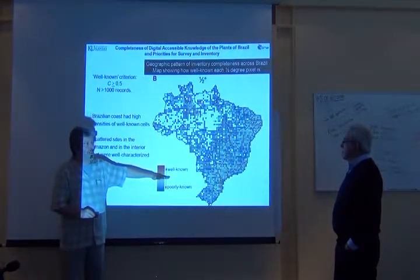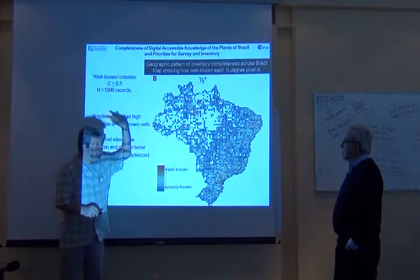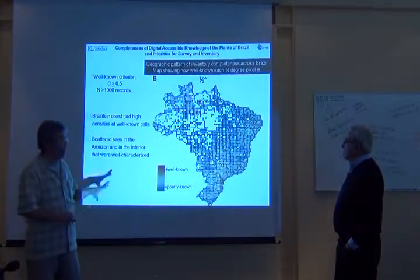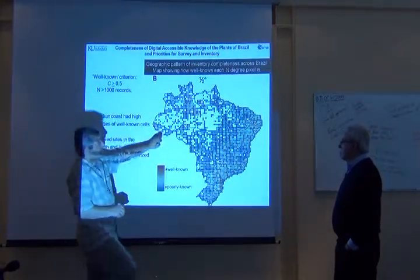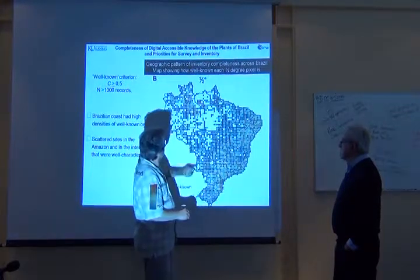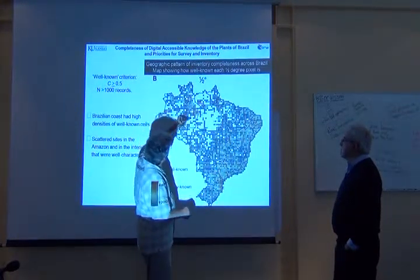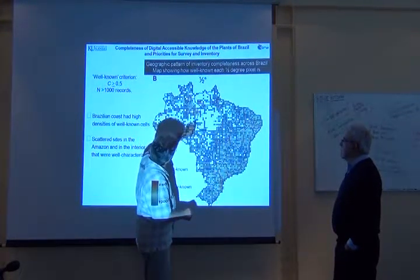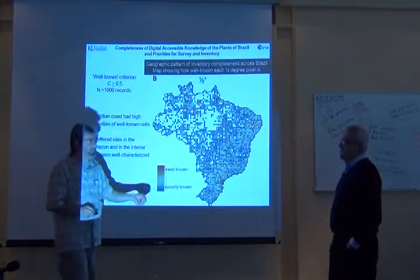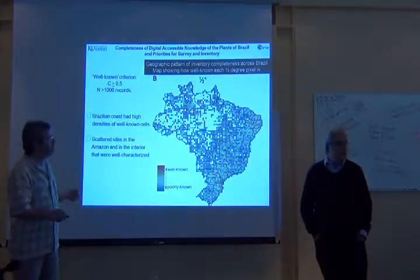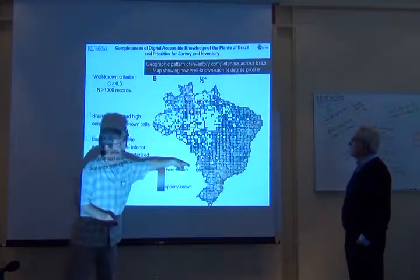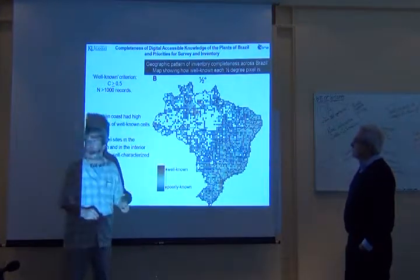We picked a cutoff point and said better than this, it's well known. And right away you can see that those well-known sites are here, and then there's Manaus — it's the city, a big city — across Amazonia and western Brazil.